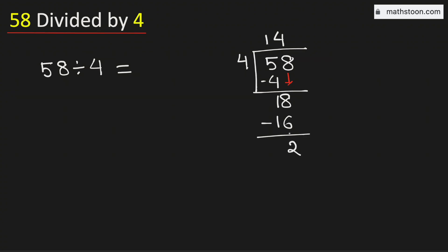Now 2 is less than 4 and there is no number to bring down here. So in this case, we will borrow 1 zero, and for that we need to place a decimal here. Now you know that 4 times 5 is 20. Subtract, we get 0.